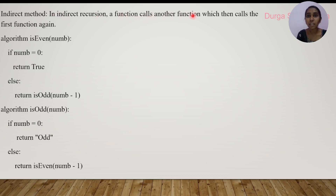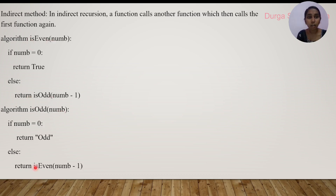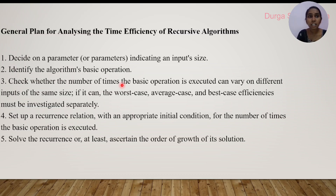Indirect recursion is when a function calls itself by using another function. Here we have two functions: is_even and is_odd. Inside is_even we call is_odd, and inside is_odd we call is_even. This mutual calling is known as indirect recursion.